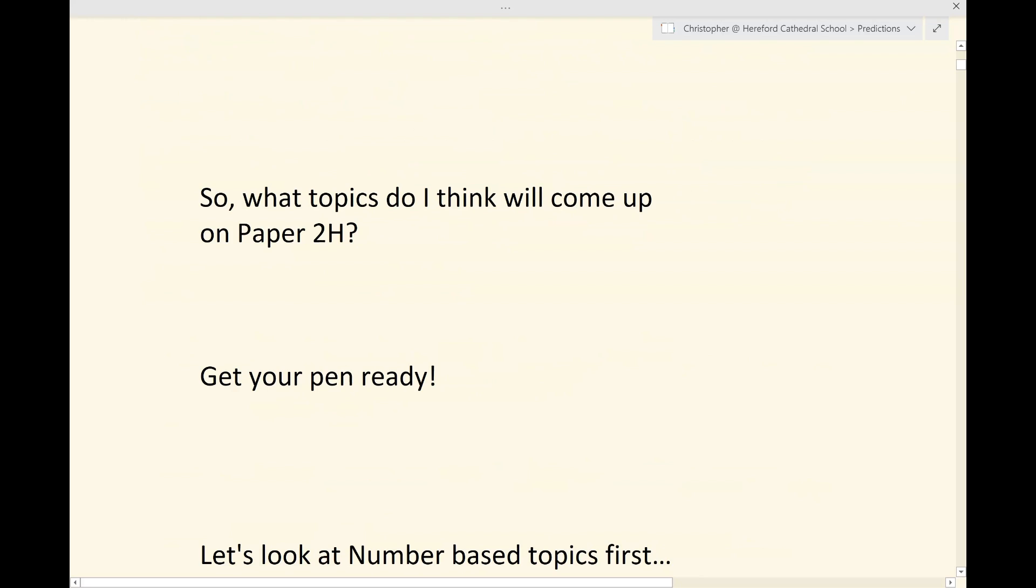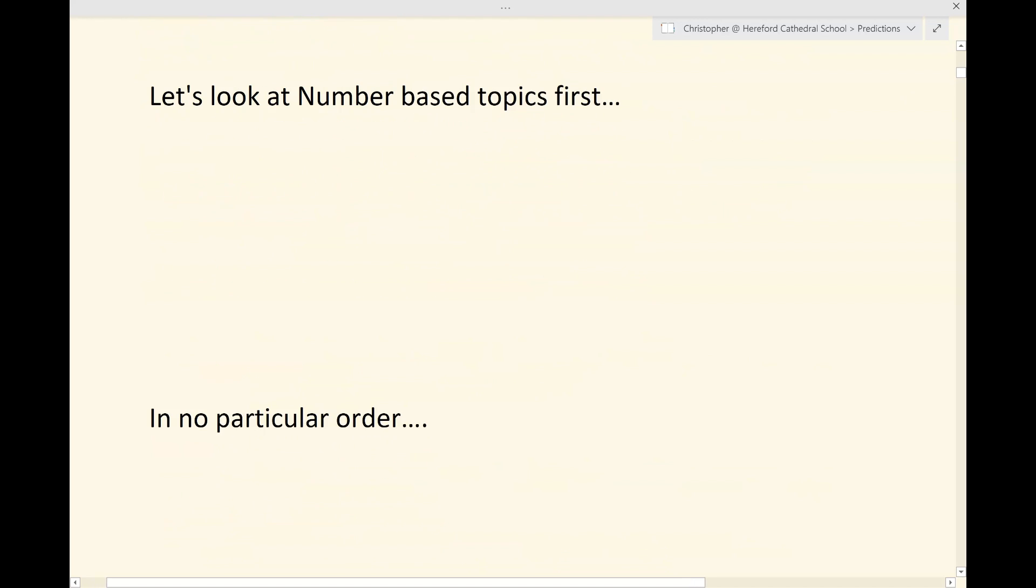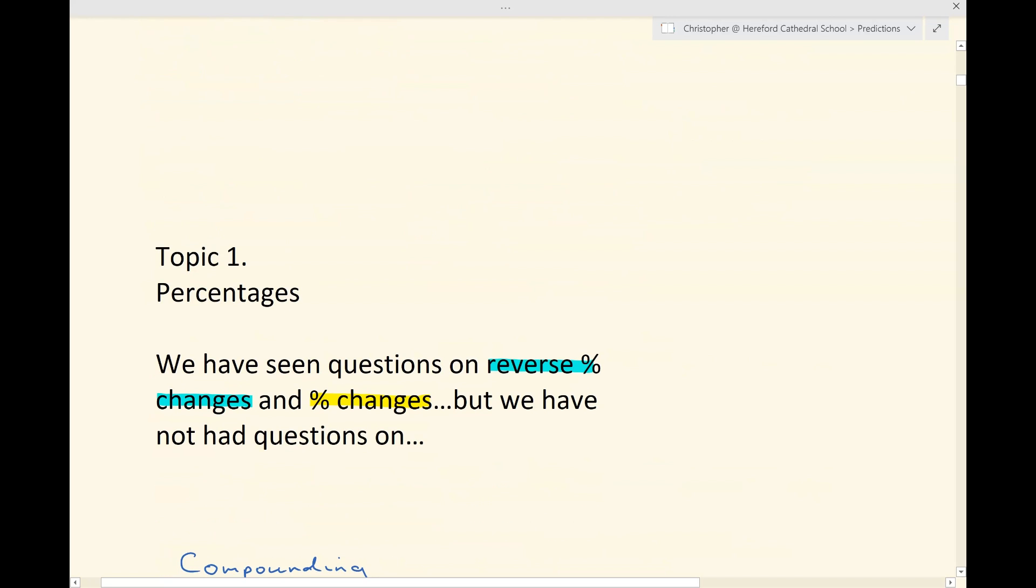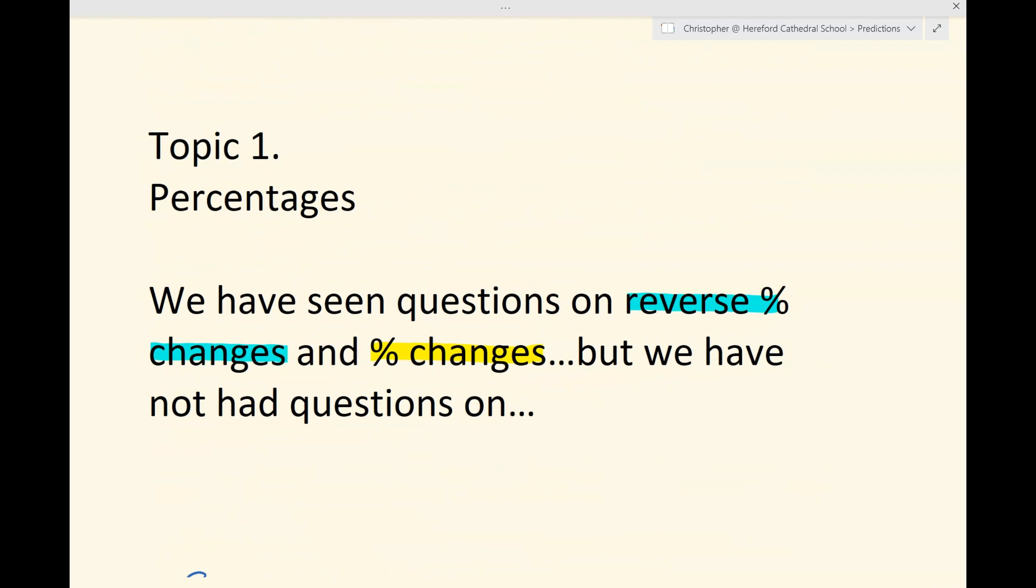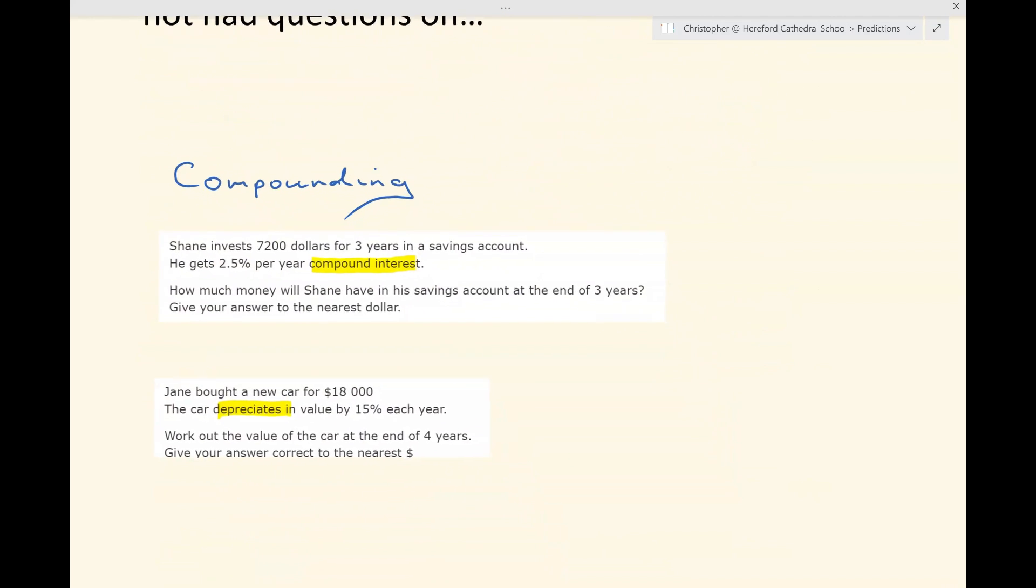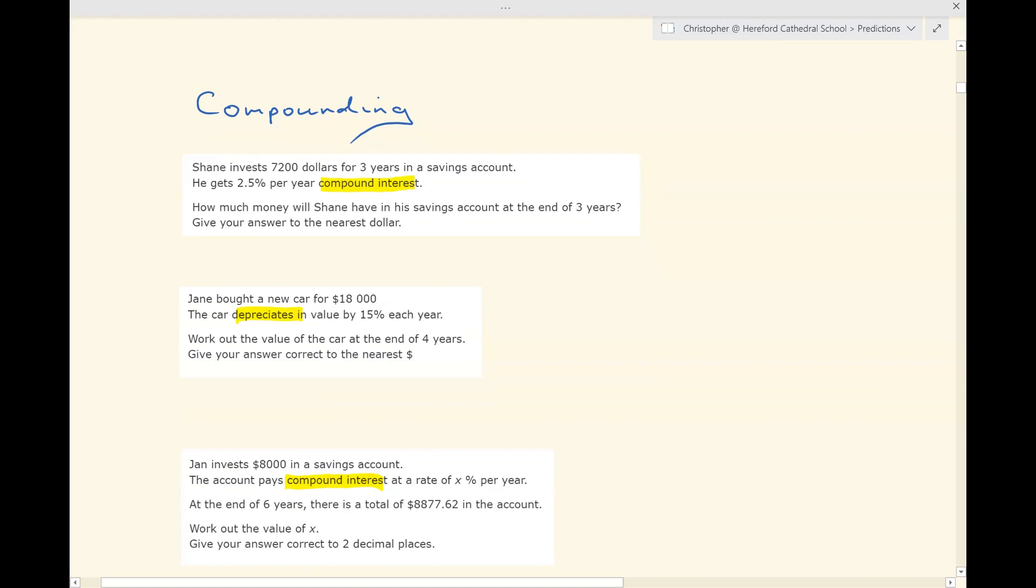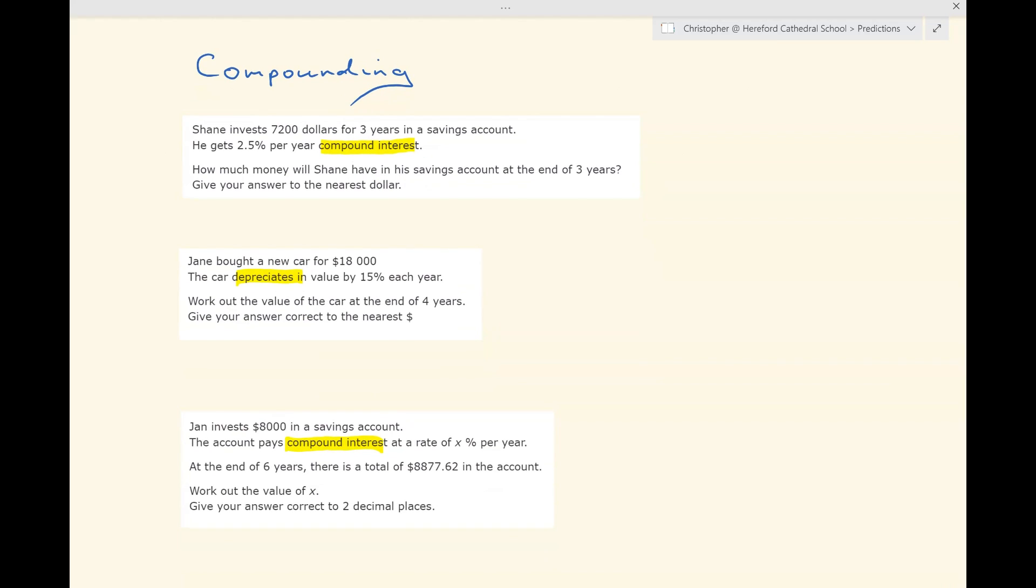First of all, number-based topics. First, percentages. Percentages often come up in several different ways across the two papers. We've already had questions on reverse percentage changes and on percentage changes but no questions yet on compounding. So I mean questions when you have to find the amount in the savings account after compound interest, perhaps several years of compound interest. I mean depreciation because that's again a compounded change.